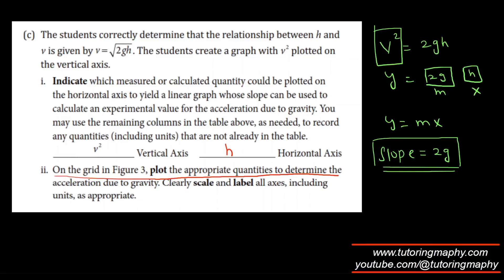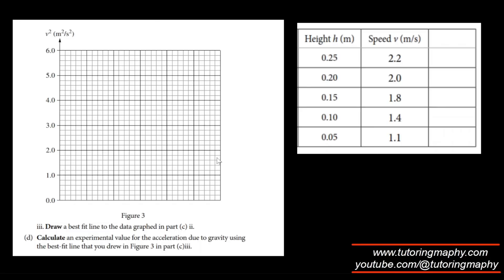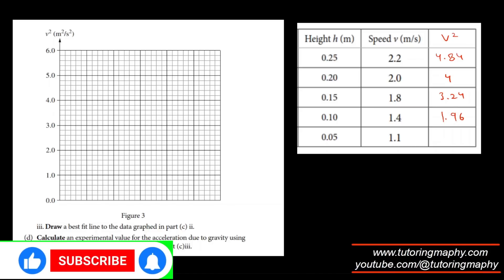On the grid, plot the appropriate quantities to determine the acceleration due to gravity. Clearly scale and label all axes. First, we need to find the value of V². 2.2 squared is 4.84, 2 squared is 4, 1.8 squared is 3.24, 1.4 squared is 1.96, and 1.1 squared is 1.21.